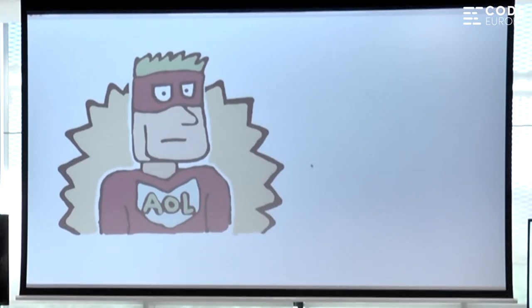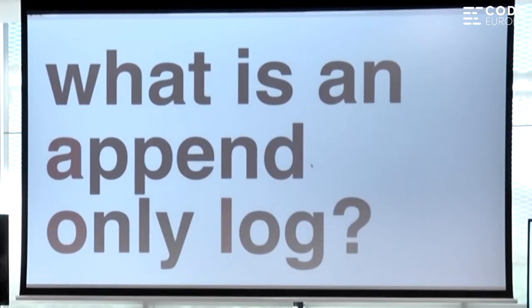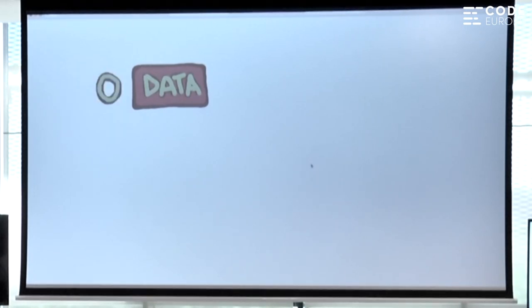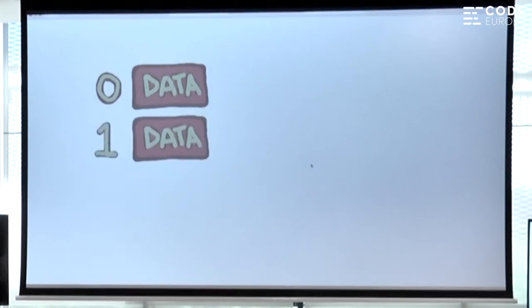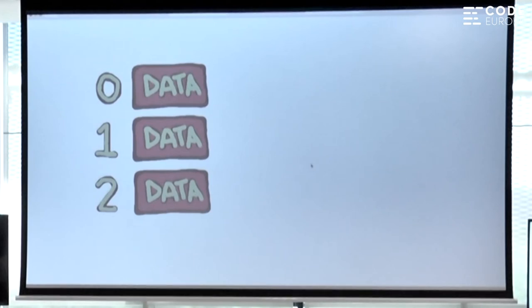Append-only logs to the rescue. So what is an append-only log? By far it's my favorite data structure of all time because it's really, really simple. It's just a log or a list of data that you're only allowed to append to — it's all in the name. If this is data, we can turn data into a list by just adding a number in front of it. So now it's a list with one item: item number zero. We can append more and more items, keep adding data, and keep doing this. The only thing we're allowed to do is append to it — we're not allowed to override zero or one.